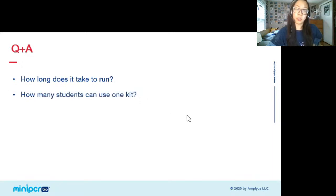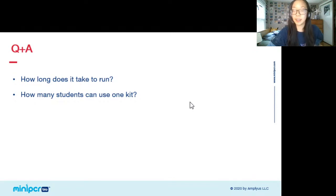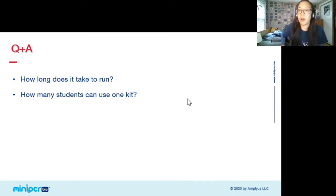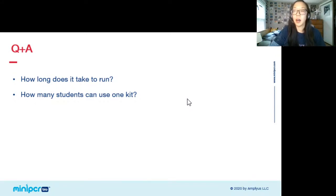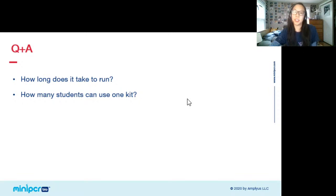How many students can use one kit? Our regular classroom kit comes with enough reagents for eight lab groups, so if you put students in groups of four that would be 32 students. We also have a mini kit in case your students are learning remotely — that gives you enough reagents to do the lab twice in case you need a do-over or want to repeat it.